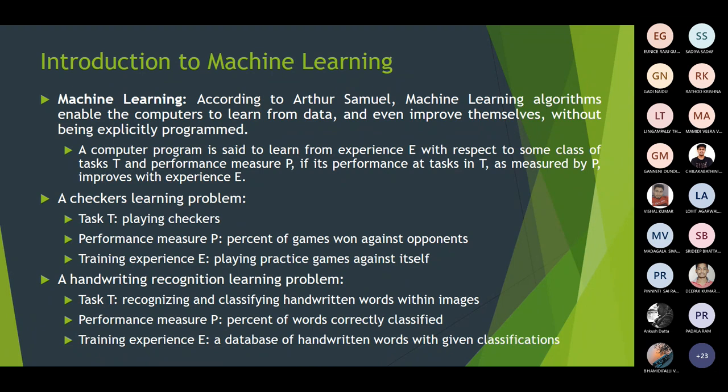The goal of machine learning algorithms is that whenever we design a machine learning algorithm or application, it should learn from data. Then gradually it will improve its performance, and when it performs tasks, it will do so without having explicit commands or explicit instructions.